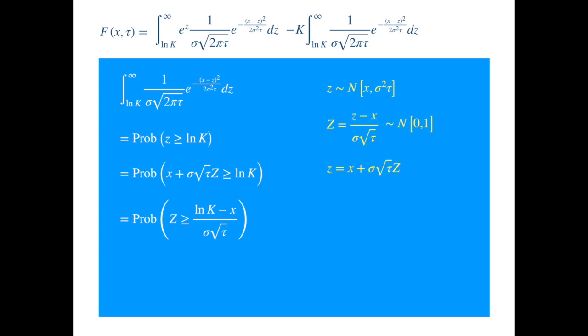The standard normal is symmetric about 0. So the probability of Z being larger than this expression is the same as the probability of Z being smaller than the negative of this expression. So we get... And if we represent the distribution of the standard normal by phi, then it becomes...